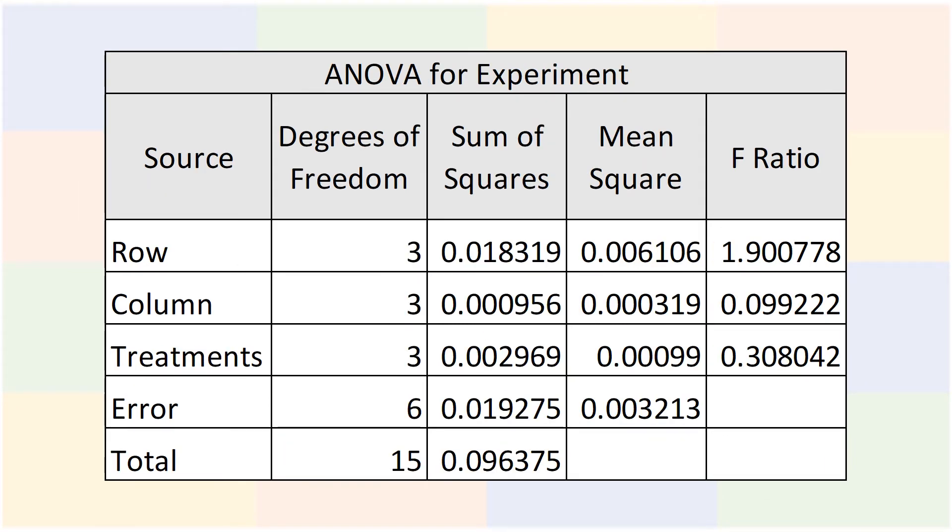This is a completed ANOVA table for the experiment described earlier using the given values. As you can see, the mean square of the rows is the only one higher than the mean square error, which indicates that one row is skewing the data. It then follows that the f-statistic for the rows, being larger than one, shows that there is a considerable amount of variation, way more than could occur by chance. This is an indication that the null hypothesis should be rejected.